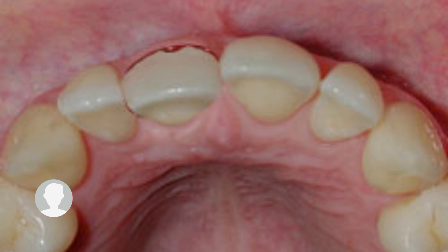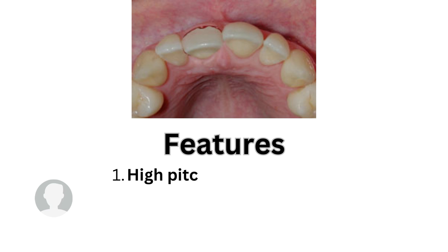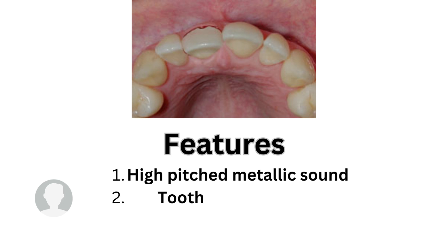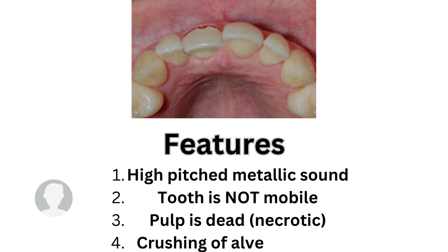The features for lateral luxation are similar to those of intrusive luxation: a high-pitched metallic sound when you tap on the tooth, the tooth is not mobile, the pulp is necrotic, and crushing of the alveolar bone is seen. The difference is that in intrusive luxation the tooth appears shorter than normal, whereas in lateral luxation you confirm the diagnosis by seeing the tooth displaced labially or palatally.